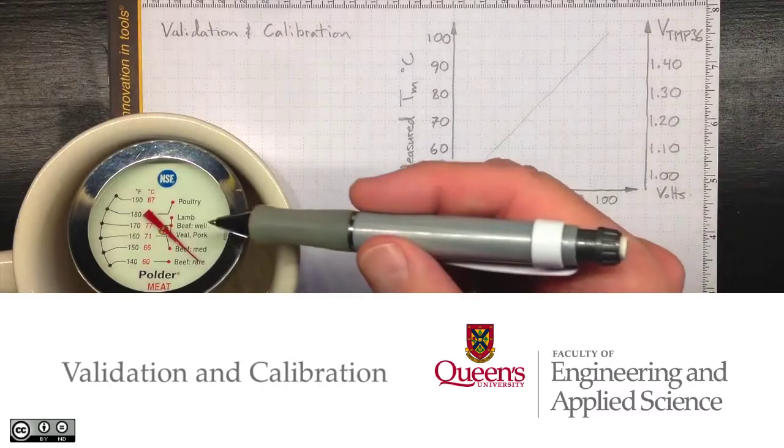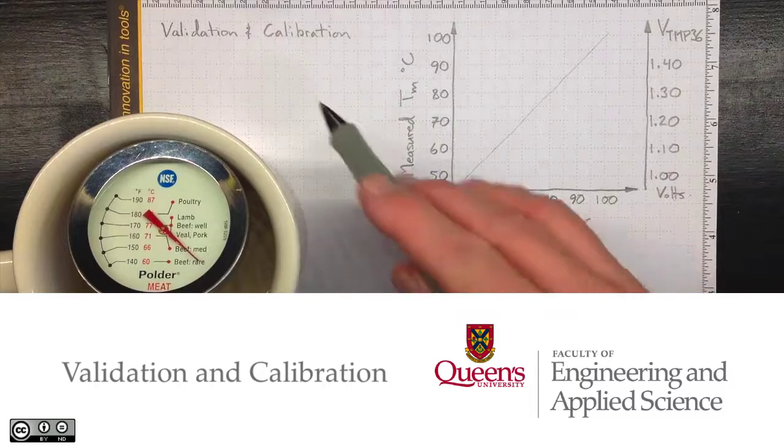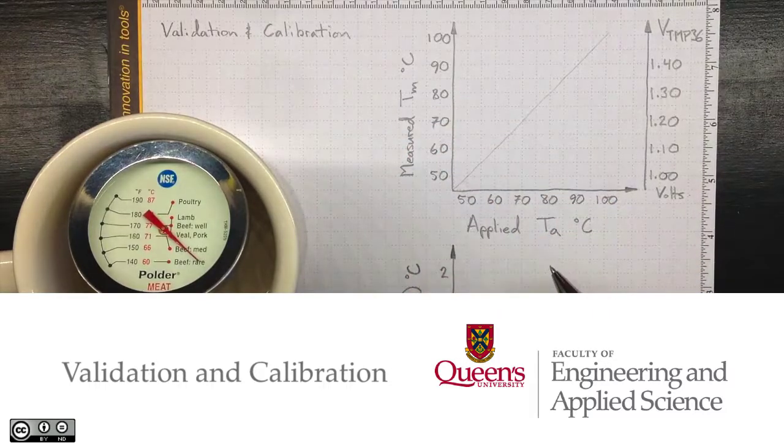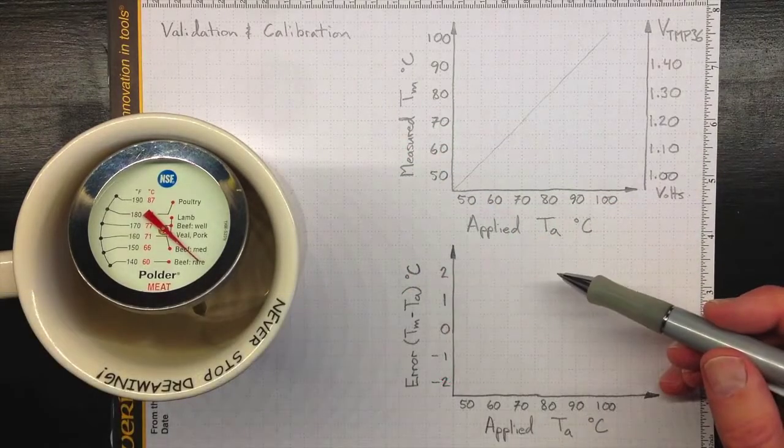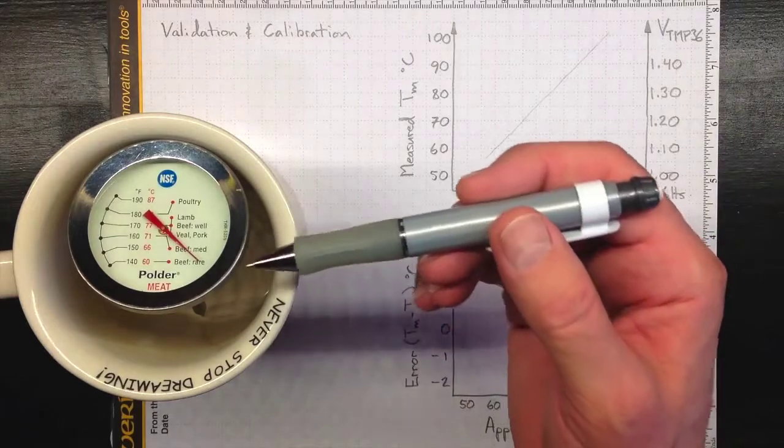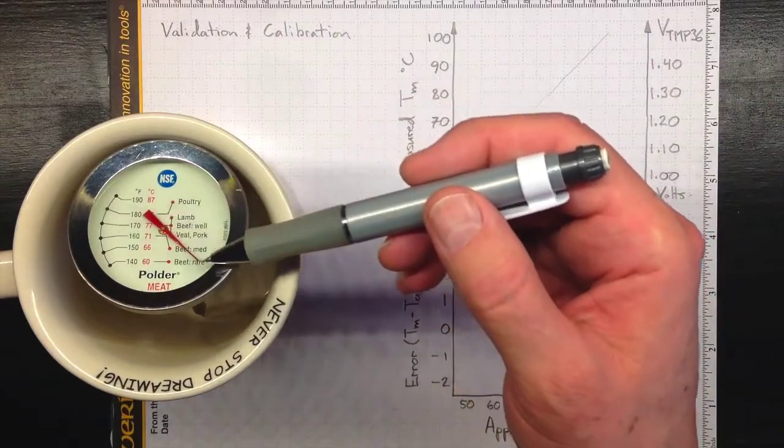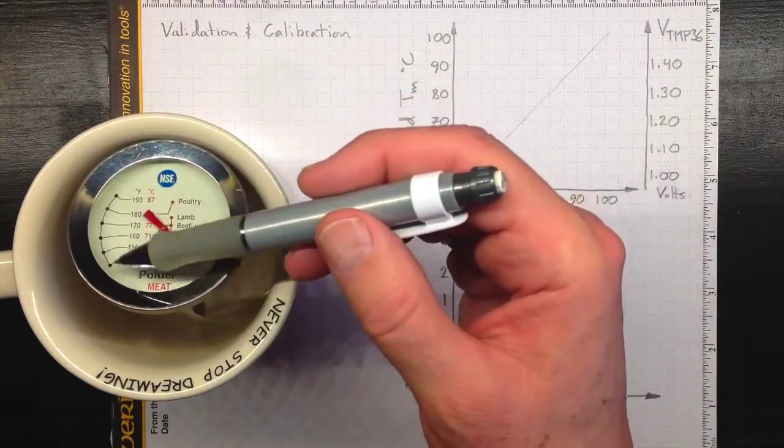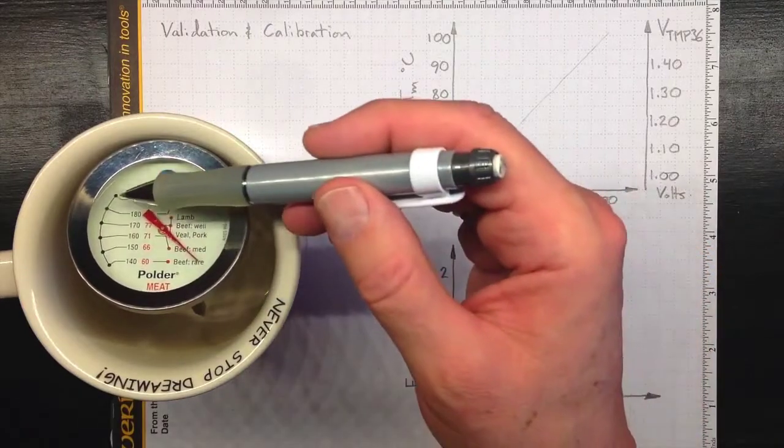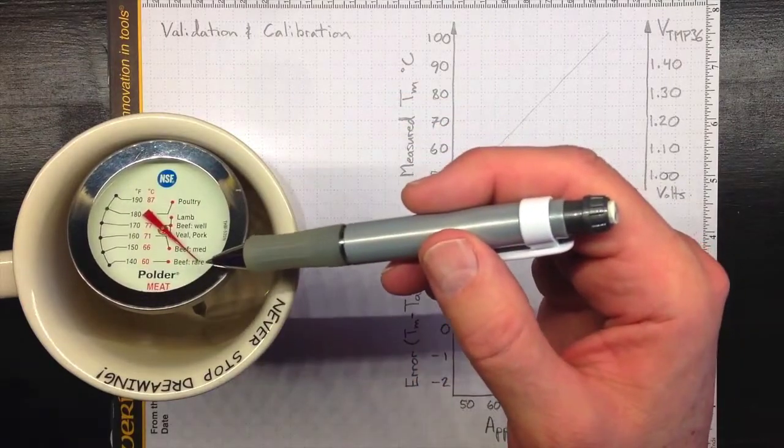At a minimum, when you're setting up an instrument to make a measurement, you should validate that it's actually giving you reasonable results. For this meat thermometer, we can look and see that the needle right now is pointing to somewhere that might match up with room temperature if we extended that scale around to there.